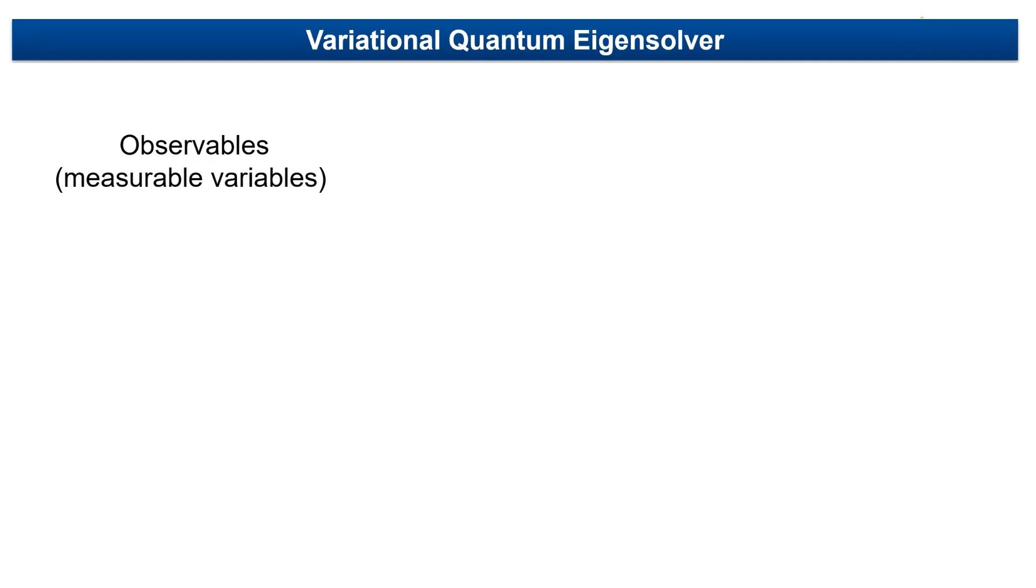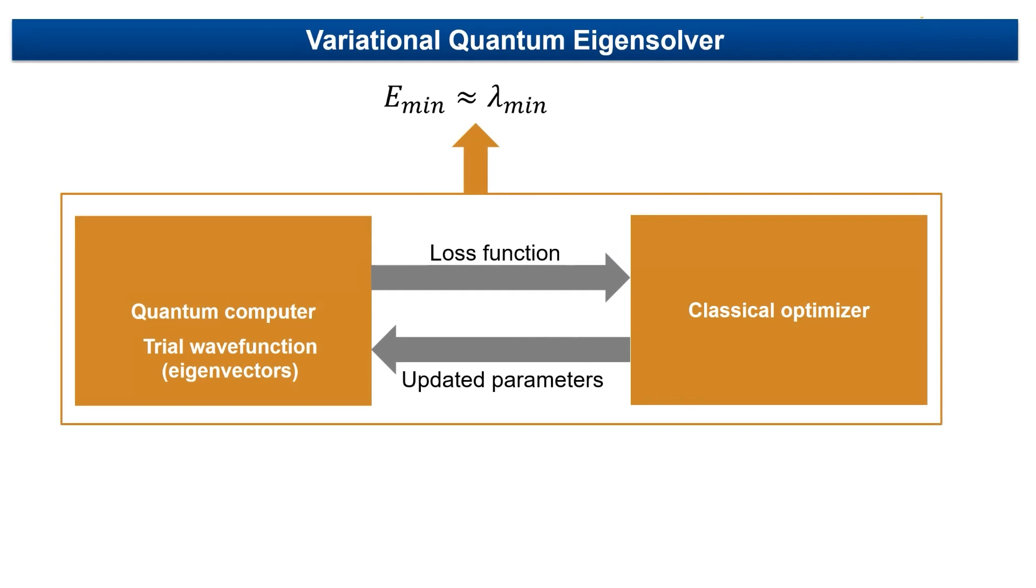A Hamiltonian is an observable in quantum mechanics, and it represents the total energy of a system. The VQE algorithm estimates the lowest eigenvalue by applying the variational method with carefully selected trial eigenvectors.